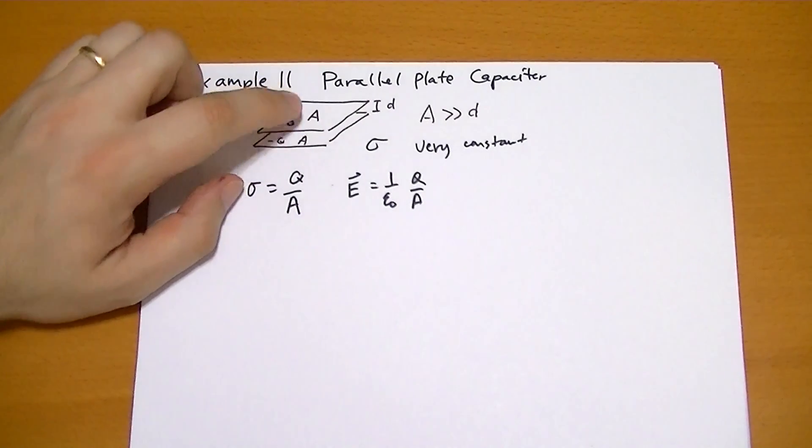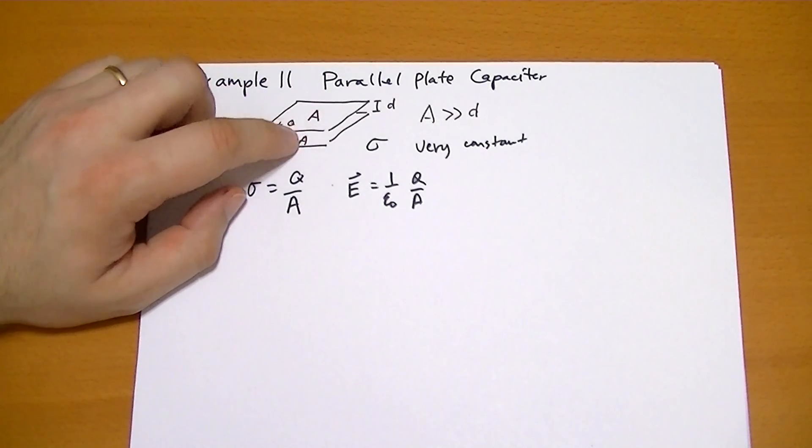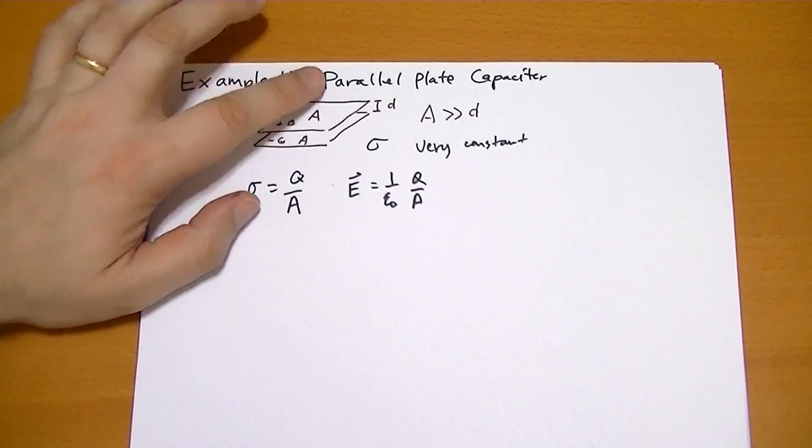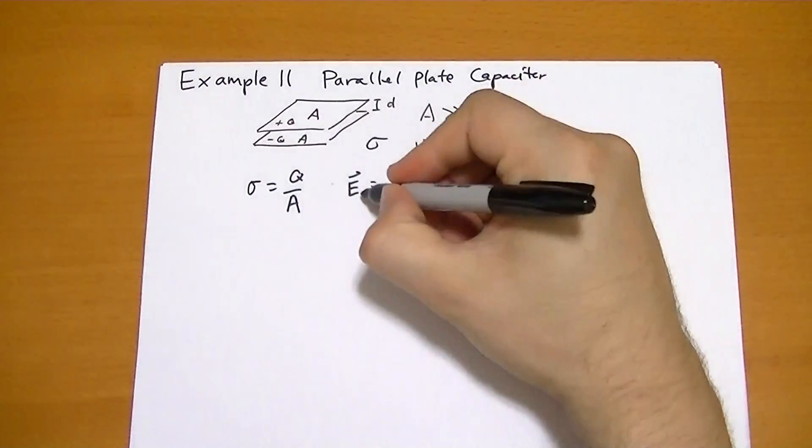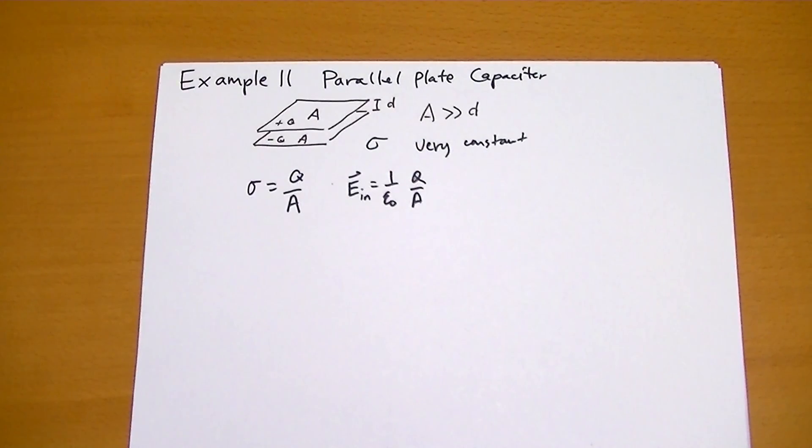And then we found out that when you have two surfaces like this, in between the electric field is twice the strength of any one surface and outside the electric field is zero. So the field is 1 over ε₀ Q over A.